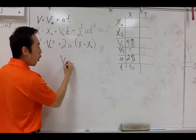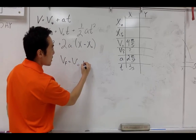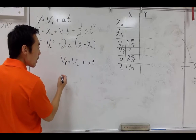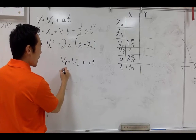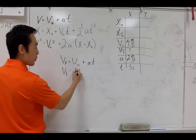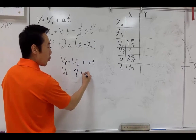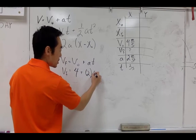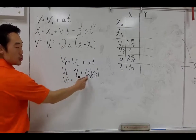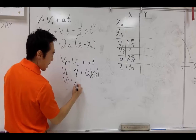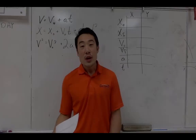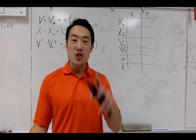Always, always, always start off with the equation without any numbers filled in. This not only helps me as your teacher see where you might have gone wrong, but it also helps me identify which equation you used. If we do that, we find that two times three is six, plus four is ten meters per second. Now that we've solved the first one, let's try the second one together.